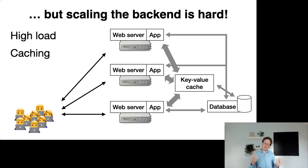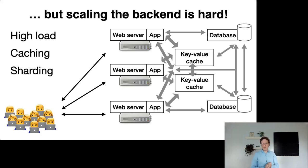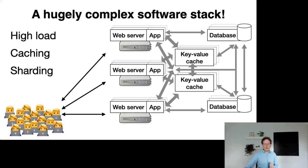In-memory caches don't offer strong consistency, but they can take a lot of the read load so the database doesn't have to serve it. Soon enough, even with more traffic, a single key-value cache is insufficient and you start sharding your cache and database — replicating, making multiple instances, building a complicated distributed storage back-end. This is a hugely complex software stack to solve a relatively straightforward and commonplace problem: serving web applications fast.